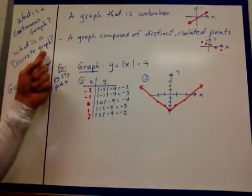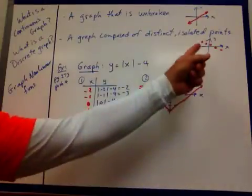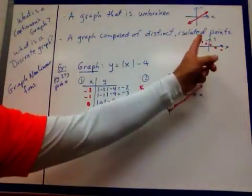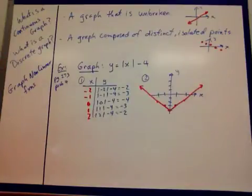A discrete graph, that's a graph composed of distinct isolated points. There are times when we're not looking for those fractional parts or anything. We just want to know what each of those particular things is.